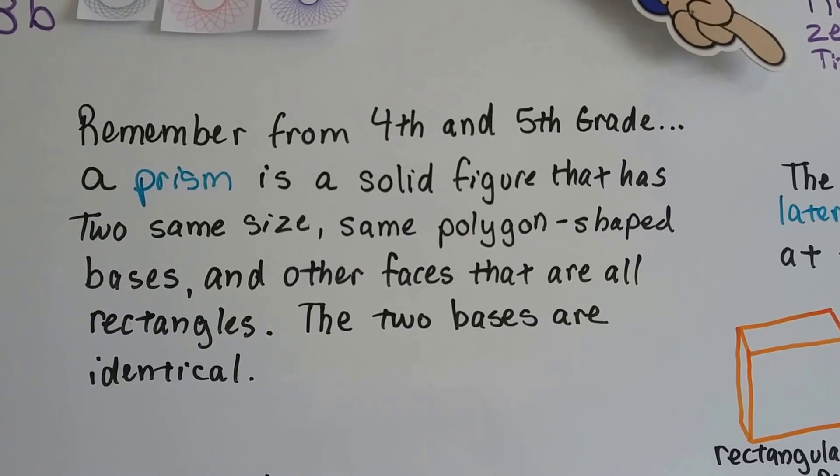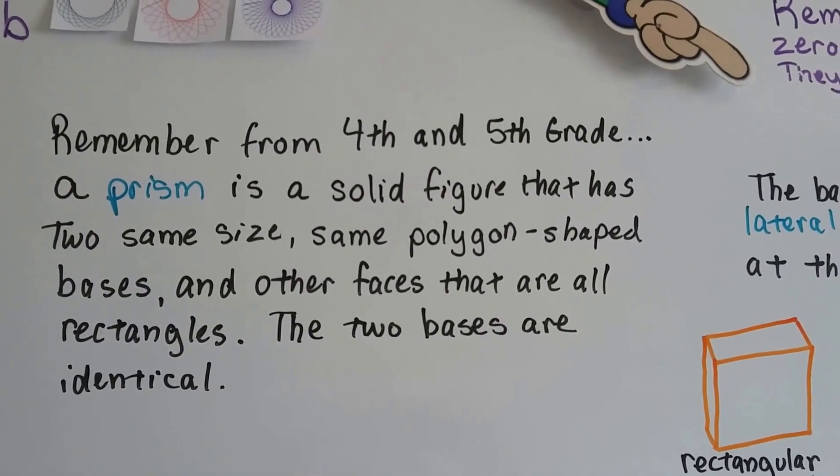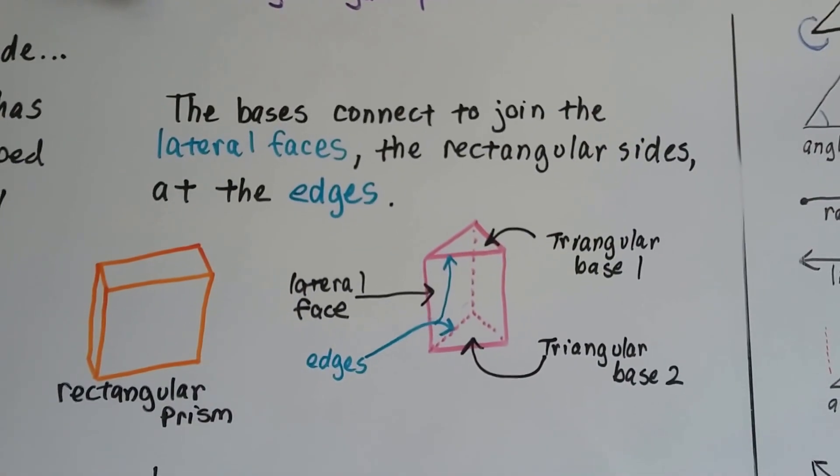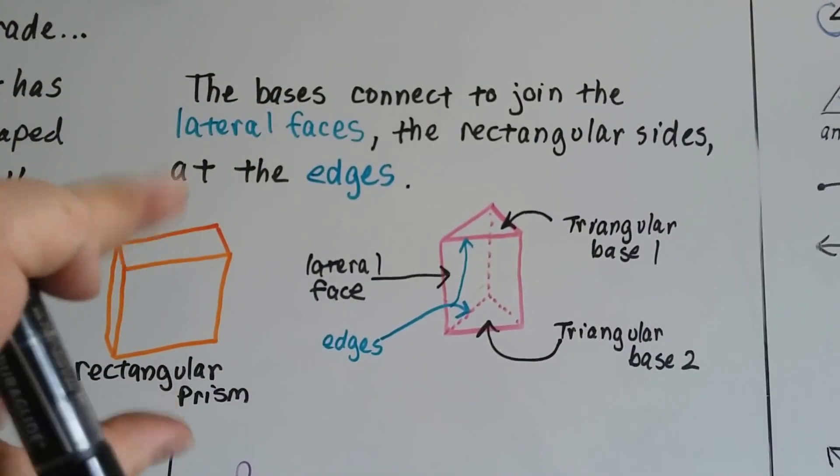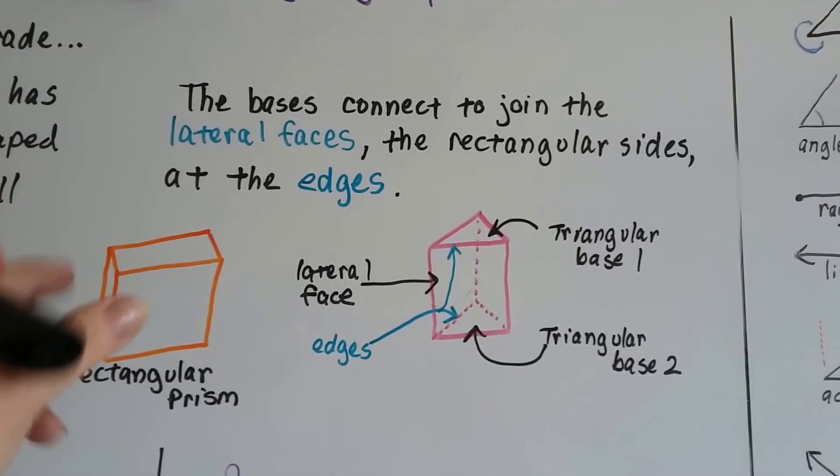The other faces are all rectangles or squares. The two bases are identical and we looked at these drawings - the bases connect to join the lateral faces. Here's the bases, base 1 and base 2. Or it could be these, or it could even be these fat parts right here, it could be laying on its side like this.